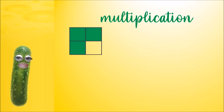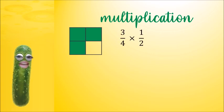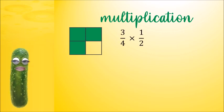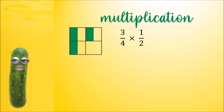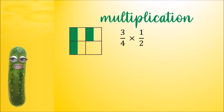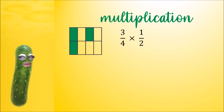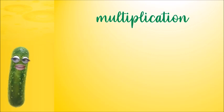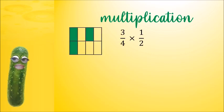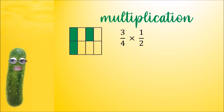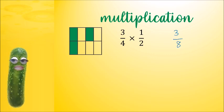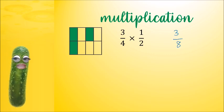Let's have a look at this: 3 quarters times a half. For 3 quarters, I want a half of each of them, like this. What is that as a fraction? We have to make the pieces all the same first. Now we can count them — that is 3 pieces out of 8 pieces. So 3 out of 8.